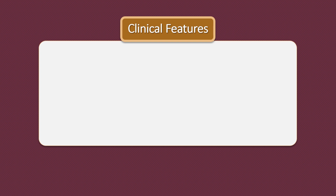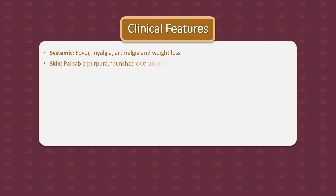Like any other vasculitis, the clinical features result from a combination of local tissue ischemia due to vessel inflammation and narrowing, and the systemic effects of widespread inflammation. Systemic features include fever, myalgia, arthralgia and weight loss in combination with manifestations of multi-system disease. Skin involvement is common; the most common skin lesions are palpable purpura, punched-out ulceration, nodules, infarction and livedo reticularis.